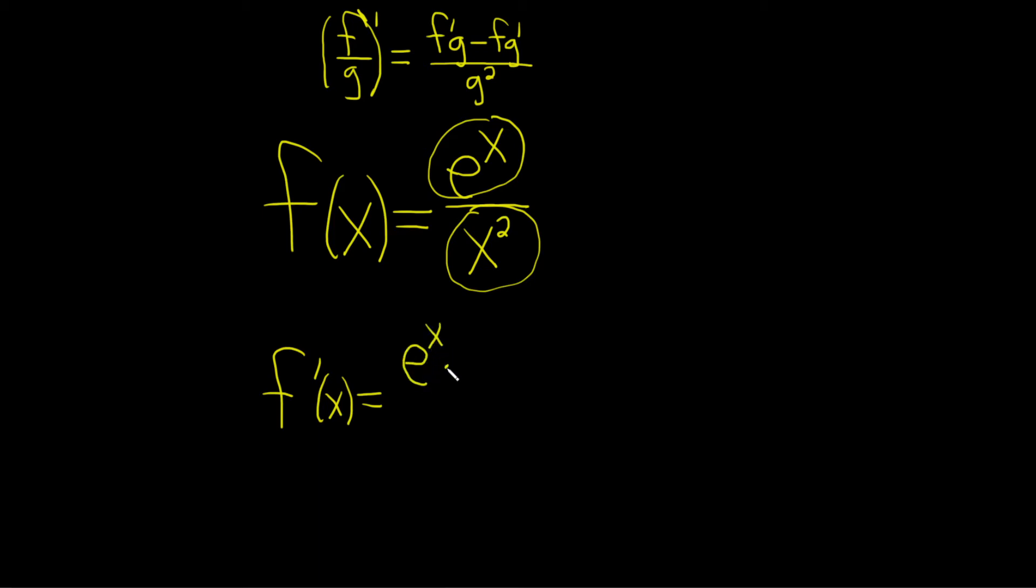So we just get e to the x times the bottom minus the top function, e to the x, times the derivative of the bottom, which is simply 2x by the power rule. You bring down the 2 and you subtract 1. It's all being divided by the bottom one, and that whole thing is squared.